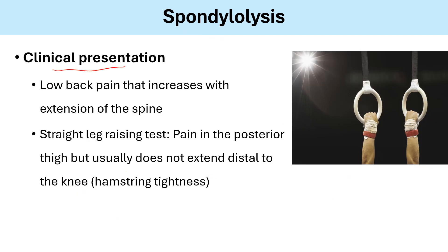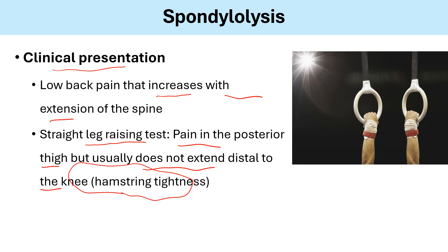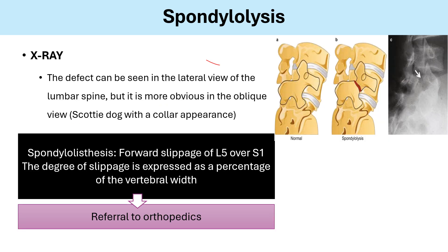Clinical presentation of spondylolysis: low back pain that increases with extension. This is the key word — with extension of the spine. A straight leg raising test will show pain in the posterior thigh, but it doesn't extend below the knee, which is well known as hamstring tightness.